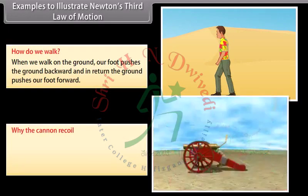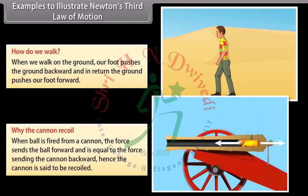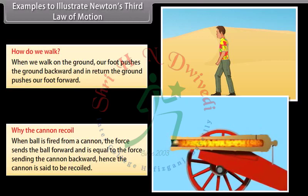Why the cannon recoil? When ball is fired from a cannon, the force sends the ball forward and is equal to the force sending the cannon backward. Hence the cannon is said to be recoiled.